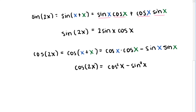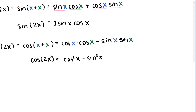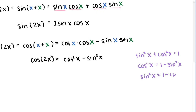The other two double angle identities for cosine come from using our Pythagorean identities. Let me write those here. Our main Pythagorean identity is sine squared of x plus cosine squared of x equals 1. We can rearrange this to get cosine squared of x equals 1 minus sine squared of x, and sine squared of x equals 1 minus cosine squared of x.